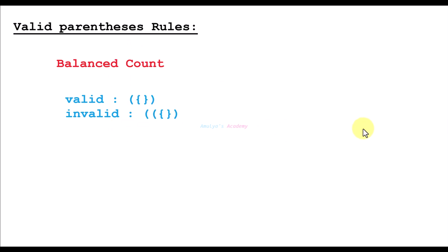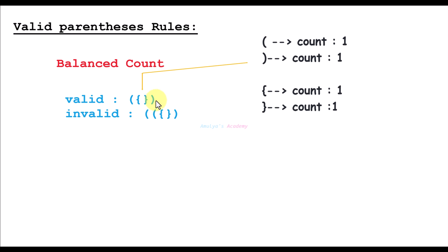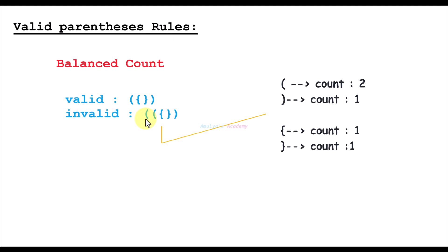Rule number 4: balanced count. Each type of bracket must appear in pairs — the number of opening and closing brackets must be the same for each type. For example, the count of open brackets is 1 and the count of closing brackets is also 1 for each type, so it is valid. Here the number of opening parentheses is 2 but closing is 1, so it is not balanced — it is invalid.